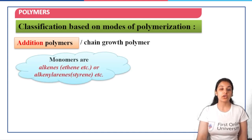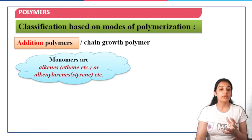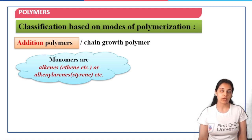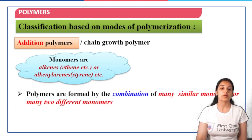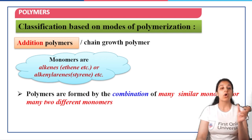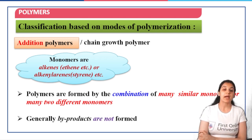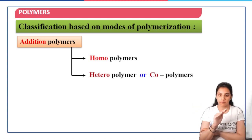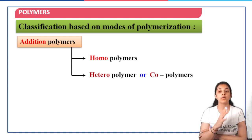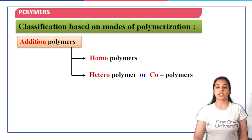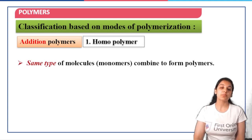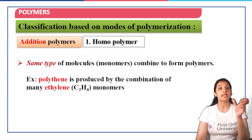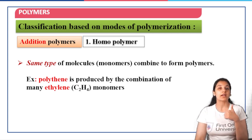Addition polymers or chain growth polymers are those which have monomers of the type alkenes, alkynes, or arenes — where you have a double bond or sometimes a triple bond present. Polymers are formed by the combination of many similar monomers or two different monomers. Generally, by-products are not formed. We can have homopolymers where all the monomers are the same. For example, polythene is produced by the combination of all ethene molecules — just one monomer, ethene, is involved.